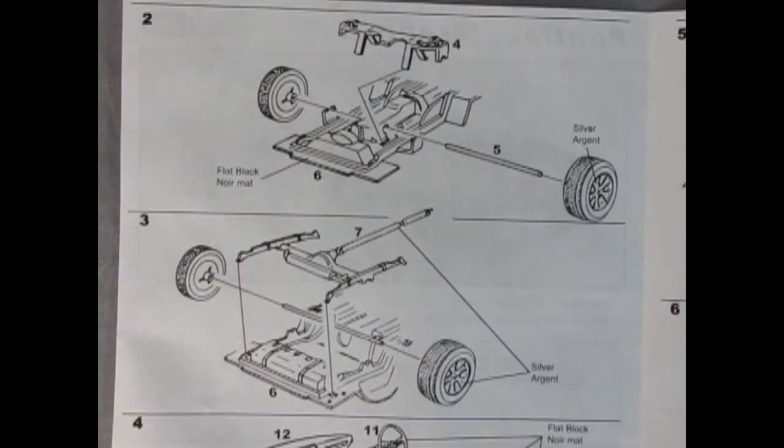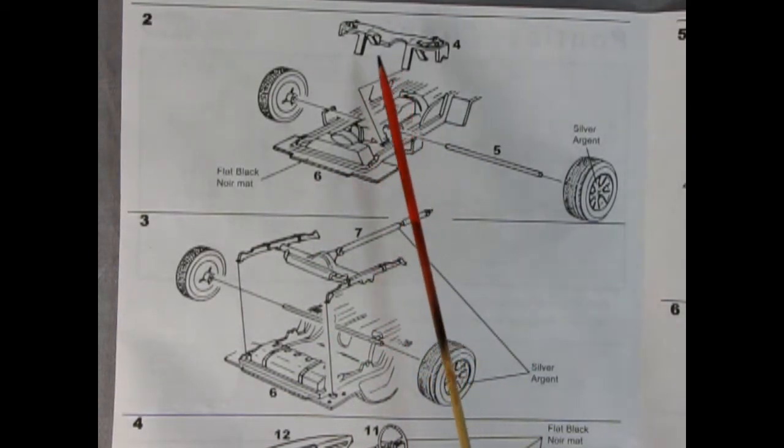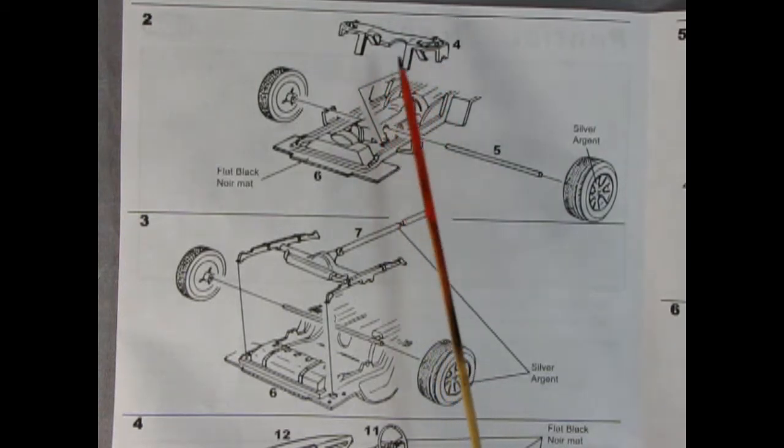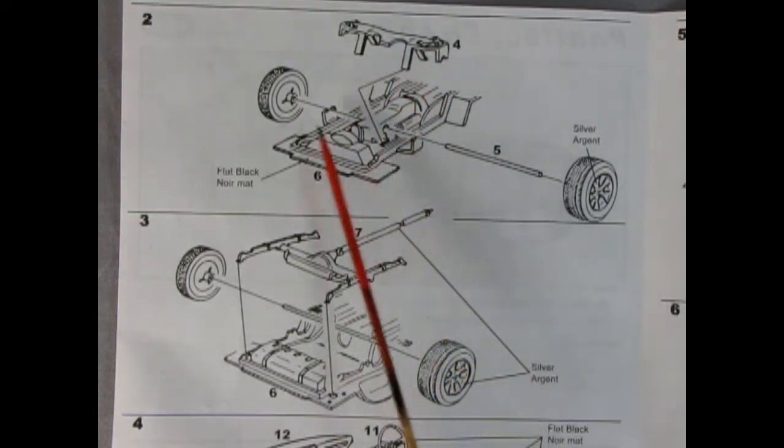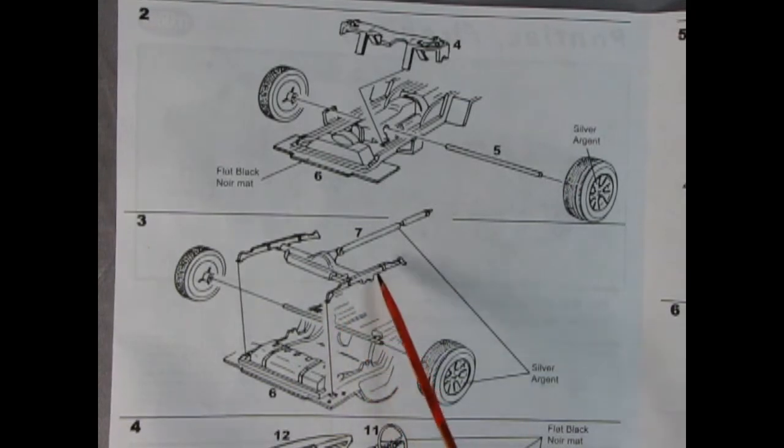Now, much like the Camaro that we reviewed a while ago, this is the same exact chassis with the same exact upper A-arm assembly right here. The plastic axle goes through all this, and then the wheels glue on. Then out back here we've got the rear differential, a little bit of the exhaust, and our leaf springs, which all go onto the back of the chassis.